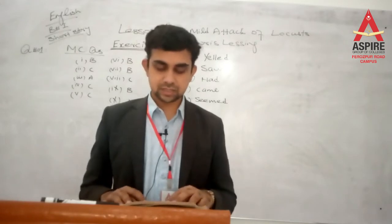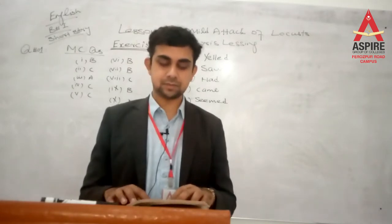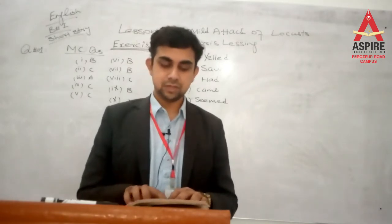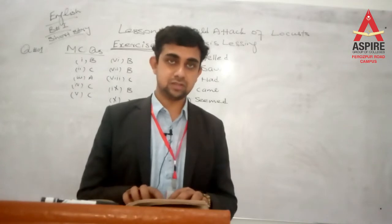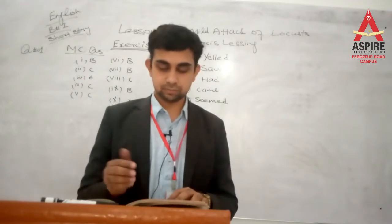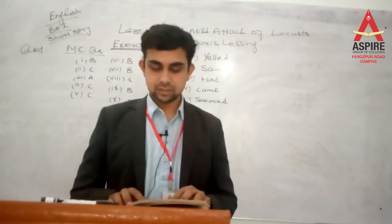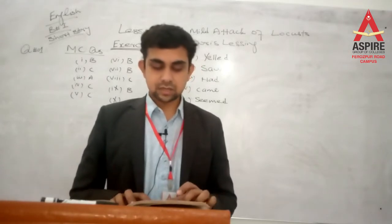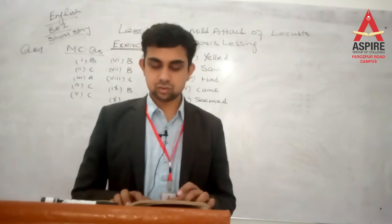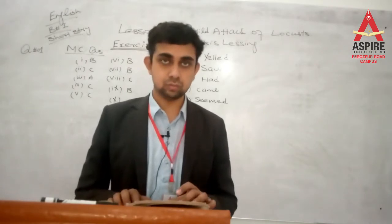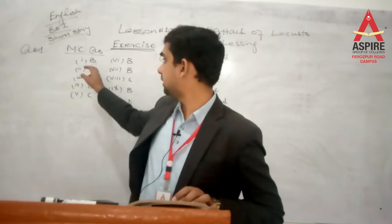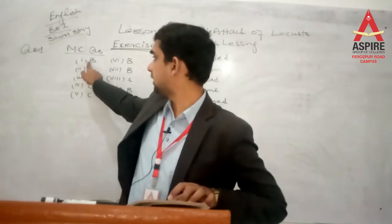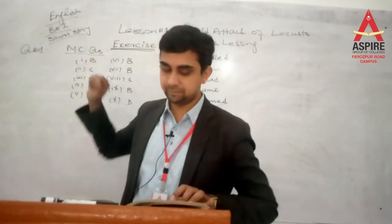Question no. 1: Choose the correct answer. Why did the cook boy run? The correct option is B: To summon the laborers — مزدوروں کو بلانے کے لیے. You can also see on the whiteboard that the first question's answer is B.